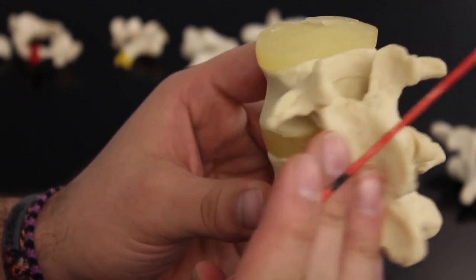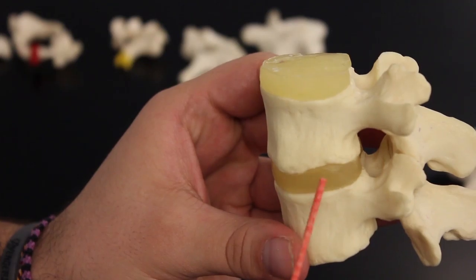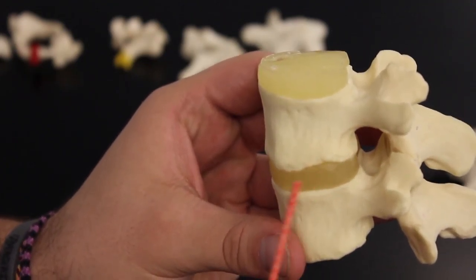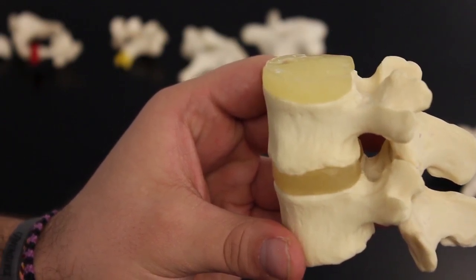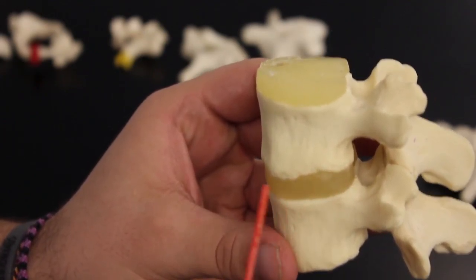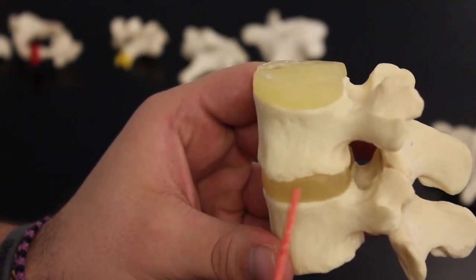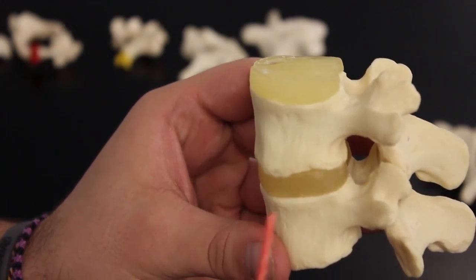And if you notice right here, these little things are actually called the intervertebral discs. This one acts as the cushion, basically like a shock absorber. They have this annulus fibrosus tissue wrapping around - it's kind of interwoven, really thick connective tissue.